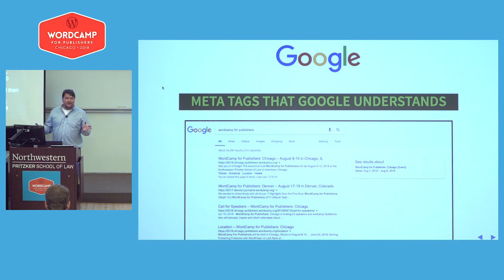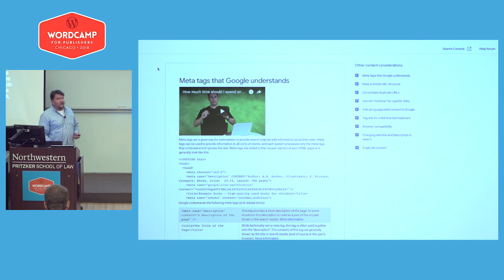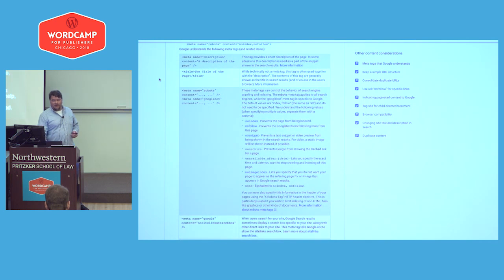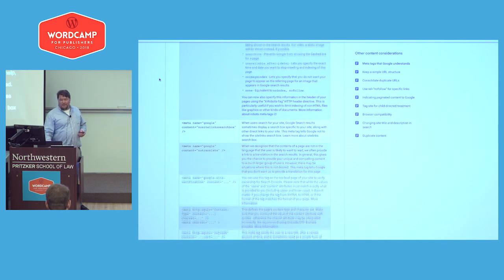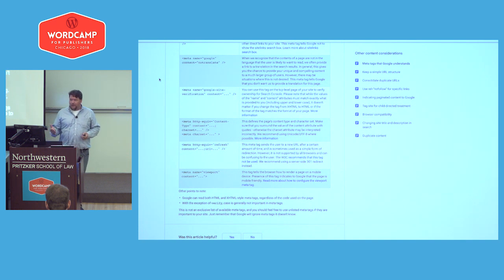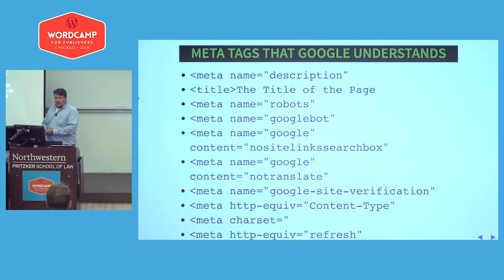Probably the most important thing to do is make sure Google likes your content. Meta tags that Google understands — it's not a secret, they tell us. As part of Search Console help, they have a list of information that they read. There are a couple of Google-specific directives for Google bots, like if you don't want a site search box to show up or don't want your content translated. Then the title, a refresh tag, a viewport tag. They clarify this is not an exclusive list — Google will simply ignore meta tags it doesn't know.